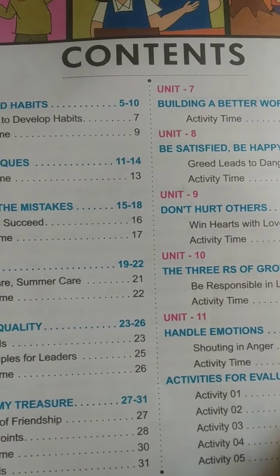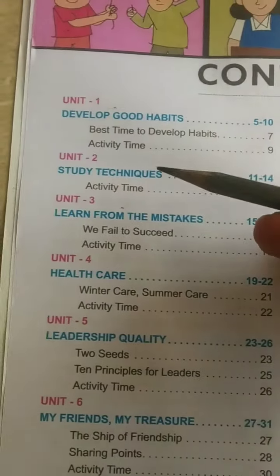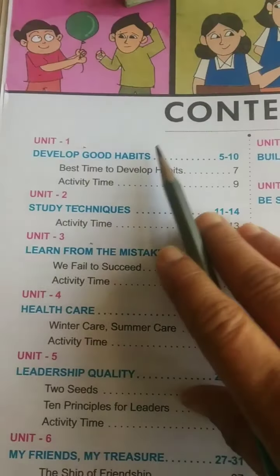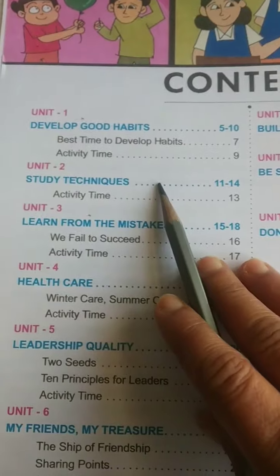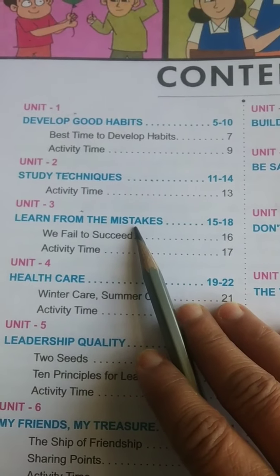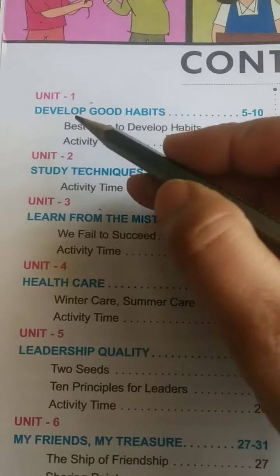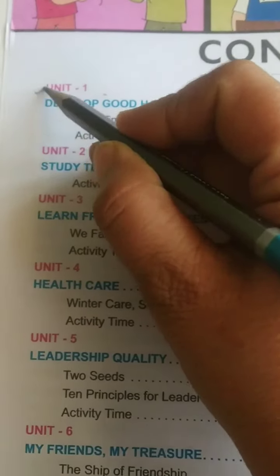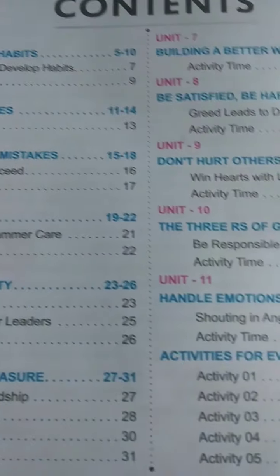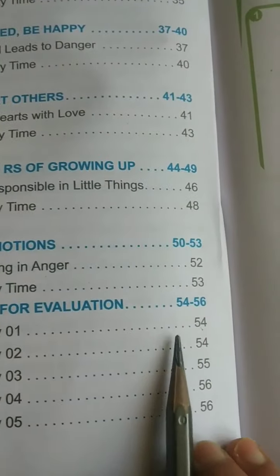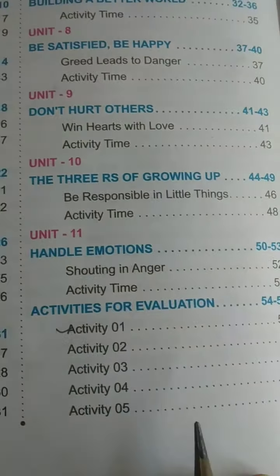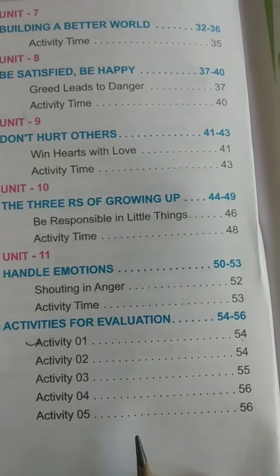Note down the labels in your notebook. It is Unit 1: Develop Good Habits. Unit 2: Study Techniques. Unit 3: Learn from the Mistakes. These three units are included in UT 1. Also, Activity 1 on page number 54 is included in UT 1 of model science.